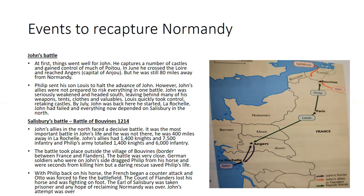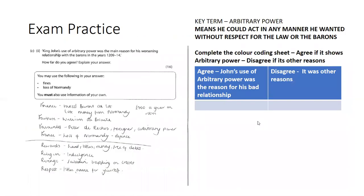Salisbury was fighting the Battle of Bouvines in 1214 — the most important battle of John's campaign, and John was 400 miles away. John's allies had 1,400 knights and 7,500 infantry; Philip had 1,400 knights and 6,000 infantry. German soldiers on John's side dragged Philip from his horse and came seconds from killing him, but a daring rescue saved Philip's life. With Philip back on horseback, the French counter-attacked: Otto fled, the Count of Flanders was captured, and the Earl of Salisbury was taken prisoner. John's attempt to reclaim Normandy was over. This triggered the barons to rebel — they had been paying taxes for ten years for this outcome.